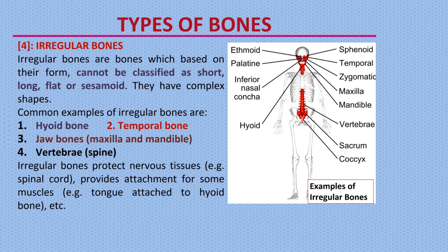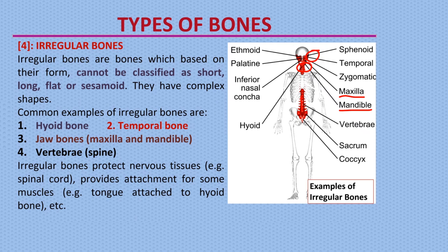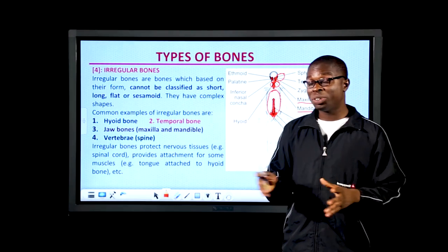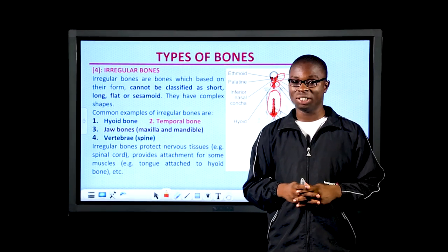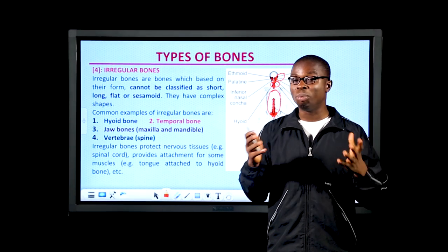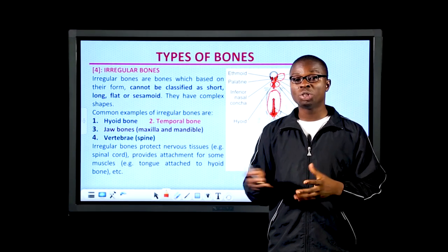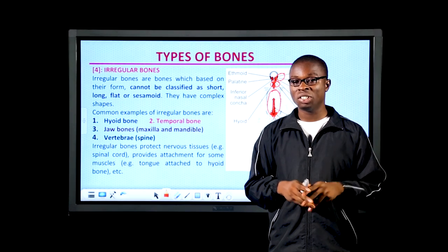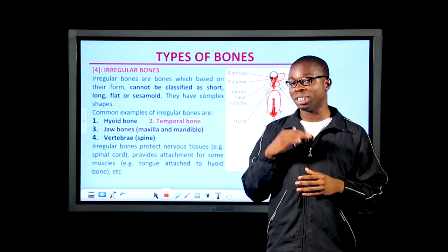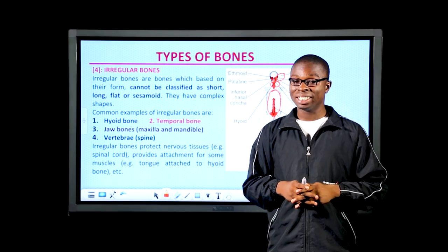Irregular bones are bones which, based on their shape and form, cannot be classified as long, short, flat, or sesamoid bones — they generally have complex shapes. Common examples include the hyoid bone found below the head, the temporal bone found close to the ear, the jaw bones (maxilla and mandible) that enable chewing, and the bones of the vertebral column that house the spinal cord. Irregular bones provide protection for nervous tissues — for example, the spinal cord is protected by the vertebral column — and provide points of attachment for muscles.